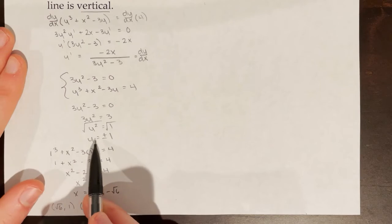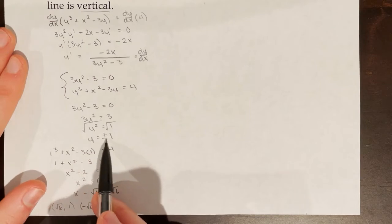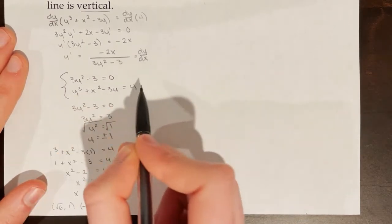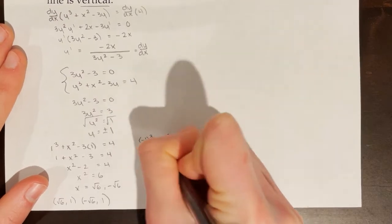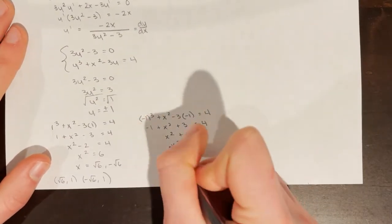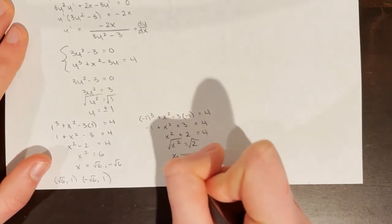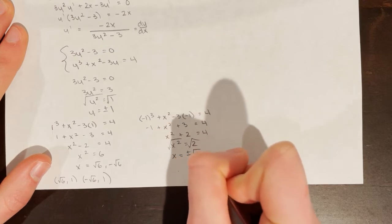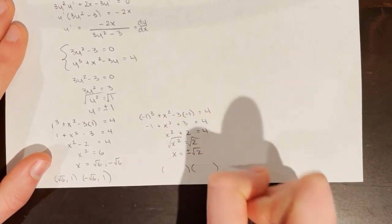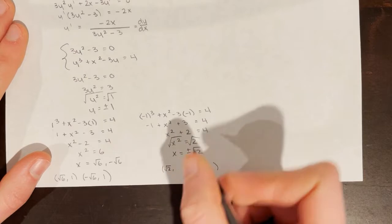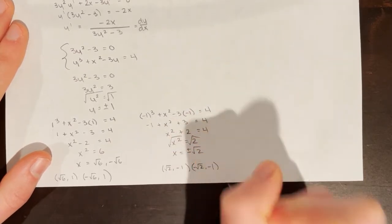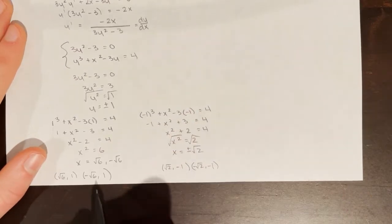Now I repeat the process for y = -1, plugging negative 1 into the equation. This time x² = 2, so x equals positive or negative √2. For y = -1, my x-coordinates can be ±√2. So I now have four potential points in total.